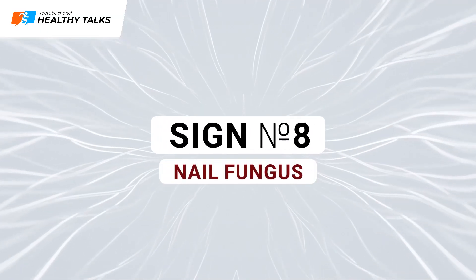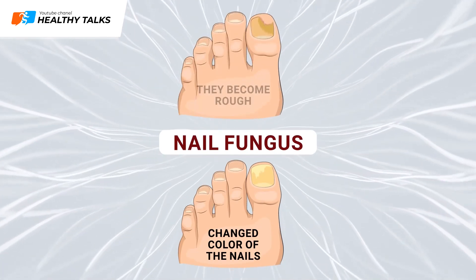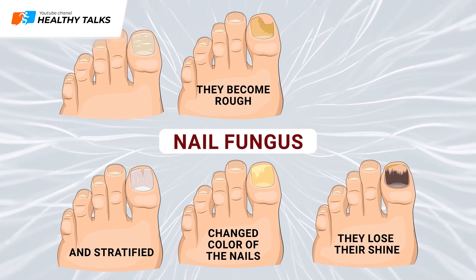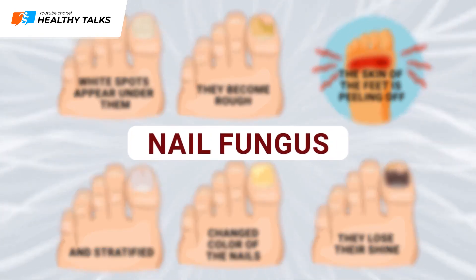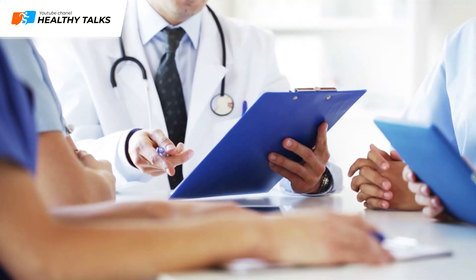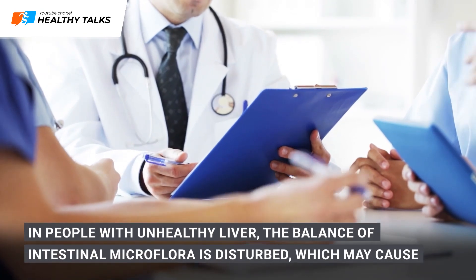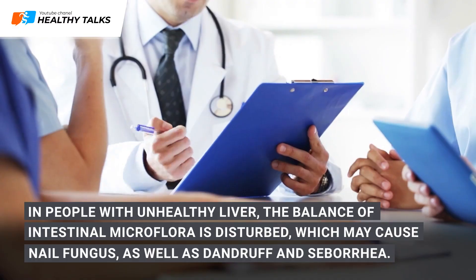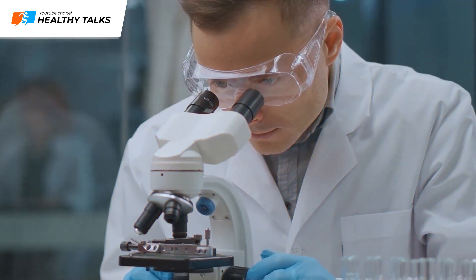Sign 8: Nail fungus. If you experience changed color of the nails, if they become rough or stratified, if they've lost their shine, if white spots appear under them, and the skin of the feet began to peel off, most likely you have nail fungus. But how can fungus be related to the liver? People with an unhealthy liver have a disturbed balance of intestinal microflora, which can cause nail fungus as well as dandruff and seborrhea.